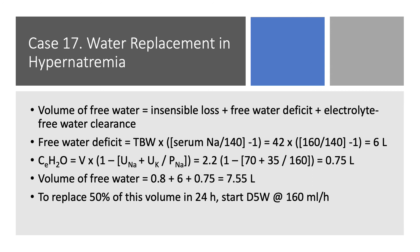We have to add the 0.75 for electrolyte-free water clearance and the 0.8 for insensible water loss, giving us 7.55 liters total. To replace it, you divide that by 2. If you give D5W at 160 mL per hour, you'll be done in about two days. Check serum sodium every six to eight hours. The next day, re-evaluate, recalculate, and modify your fluid rate accordingly. Usually, we don't need to replace more than 50 percent on day one, sometimes less, depending on the total deficit.